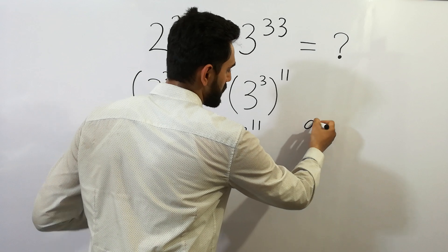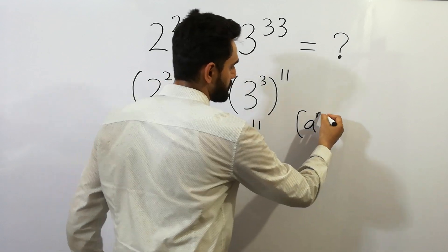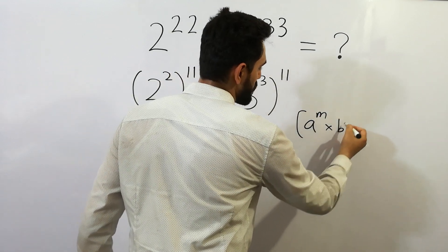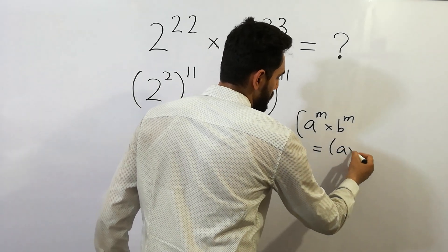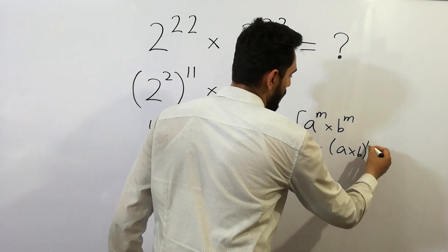As we know that a to the power m times b to the power m is equal to a times b to the whole power m.